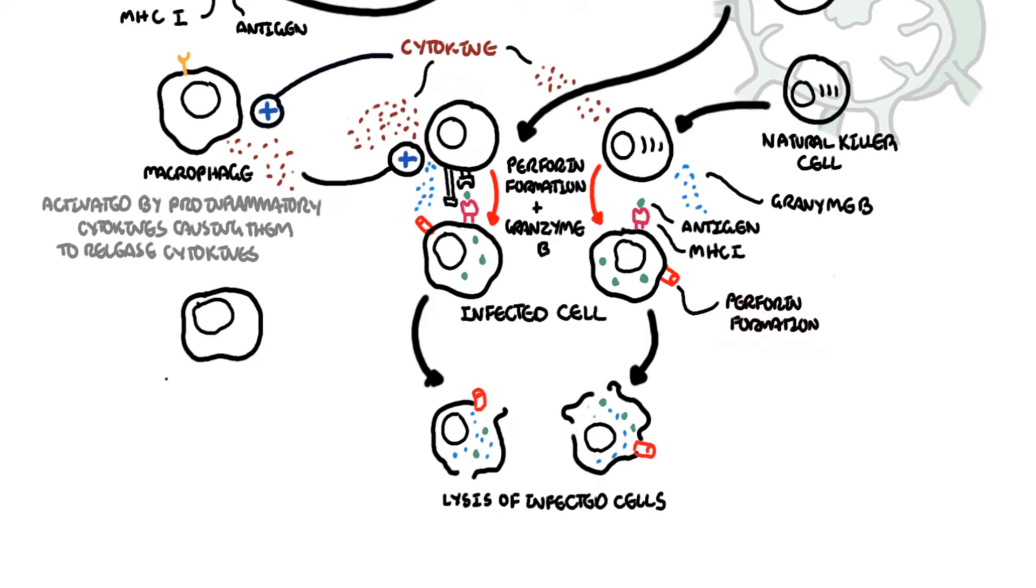Oftentimes, macrophages can be overactive and release too many cytokines even after the culprit or the problem has been resolved. In this scenario, cells such as the natural killer cells and cytotoxic T lymphocytes will actually eliminate the stressed macrophage, again via the perforin channel and the granzymes.